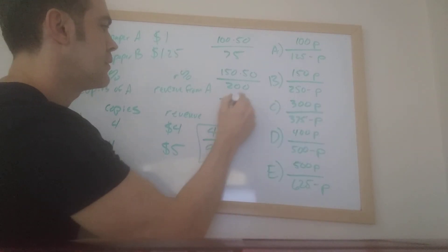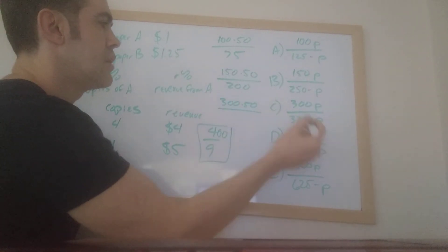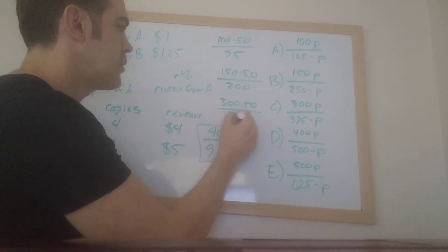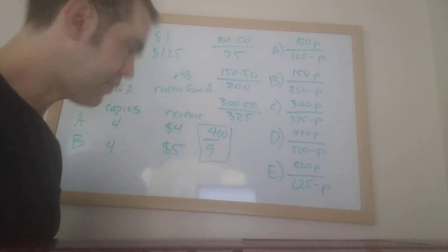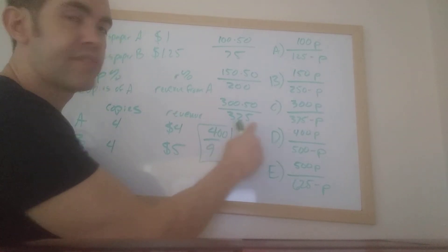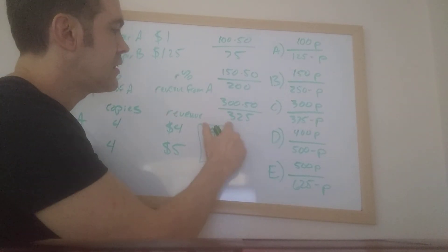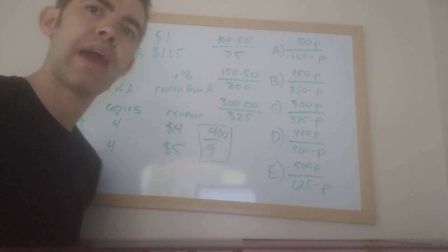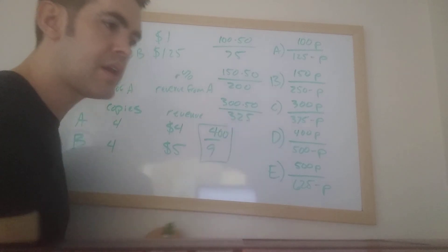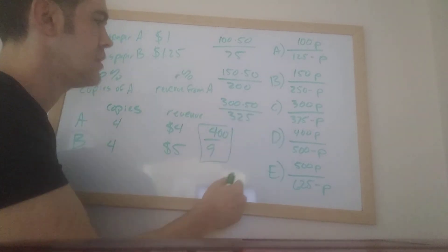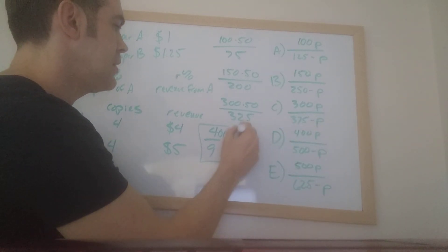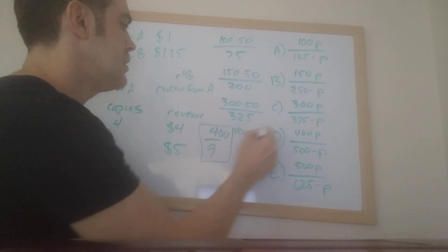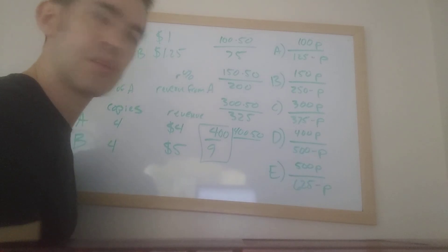So working our way down the list, 300 times 50 over 375 minus 50, that gives me 325. That looks kind of a little bit more hopeful. But if you use your divisibility rules, like I want to know whether this is divisible by 9. So if I add the digits, 3 plus 2 plus 5, I get 10. And since they don't add up to a multiple of 9, I know that this is not divisible by 9, which means that this is not the answer either. Let's try D. Got a good feeling about D. 400 times 50. Write that in.